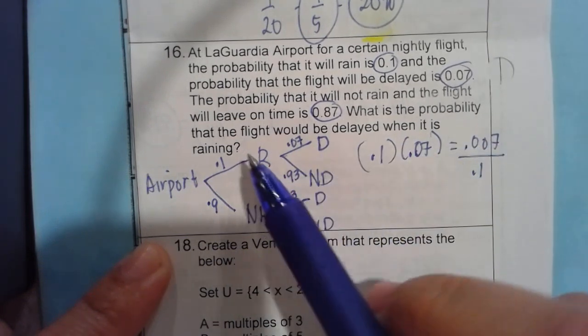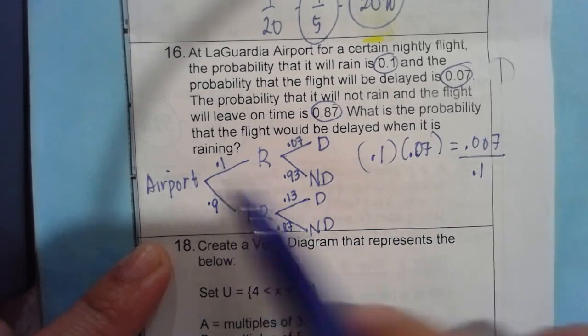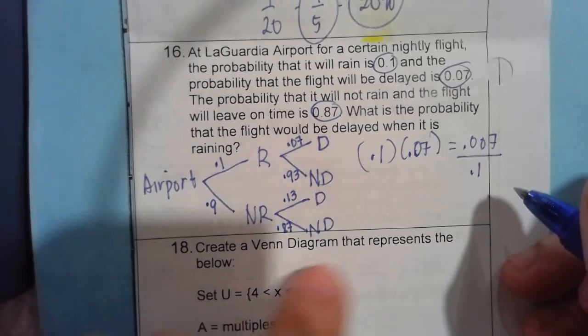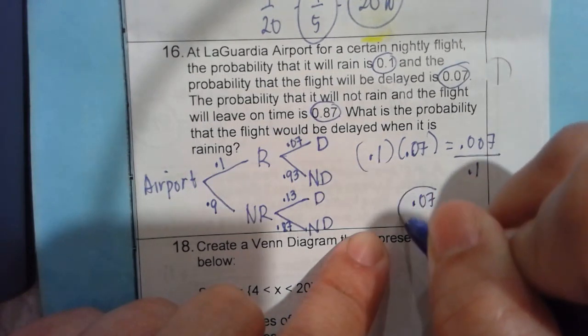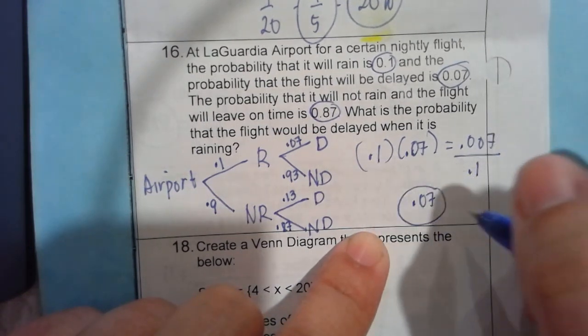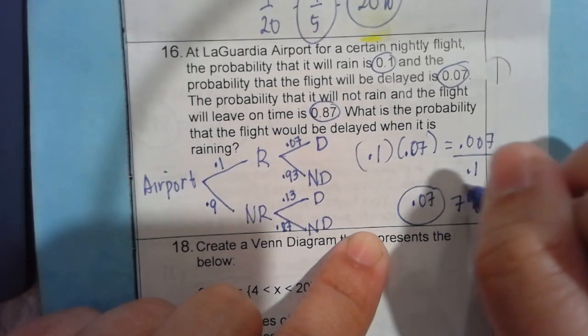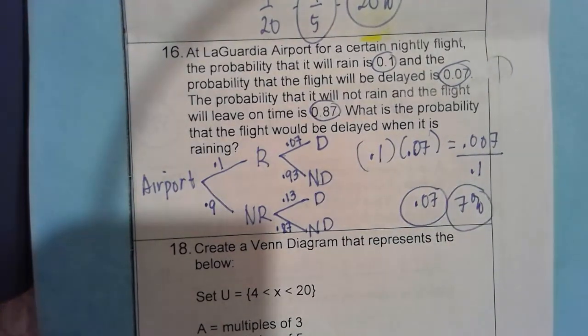Remember, this is just delayed when it is raining. So that's 0.1. So therefore, that will be 0.07 or we can have 7 plus 1. That's the answer.